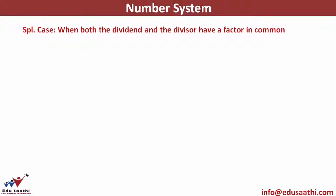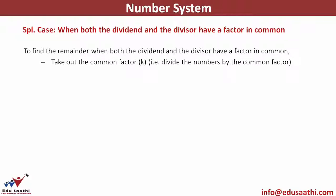When the dividend and divisor have a factor in common, to find the remainder, take out the common factor K. That means divide the numbers by the common factor, but do not cancel it. The common factor cannot be cancelled; you will take it out.